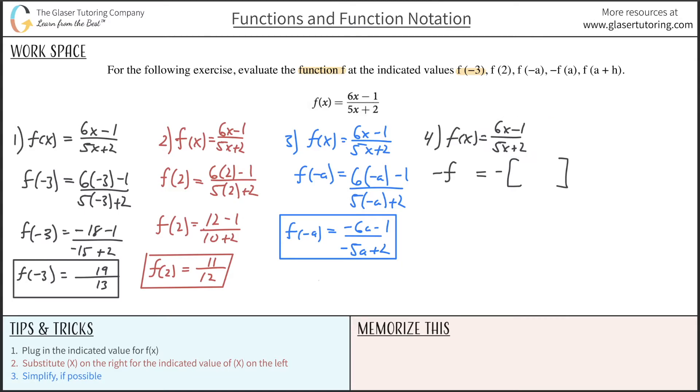The next thing I do is then plug in my indicated x value. So they wanted us to find it for a. So now the process is identical, right, to what we've done. So this is just 6 times a, substitute out x for a, over 5 times a plus 2. Right?